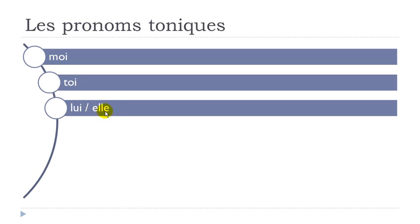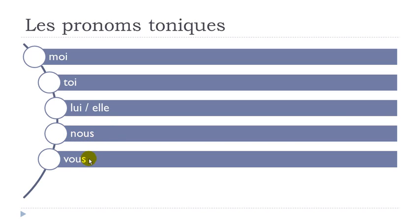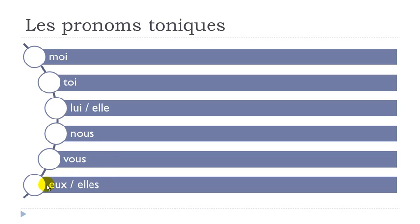But for the feminine form it's the same: ELLE. Good news — same thing for the plural: NOUS and VOUS. They don't change, just like the pronom personnel. And for the third person plural, the masculine form changes and you get EUX — remember the final X is not pronounced: EUX. And then plural ELLES, ELLES. So let's see them one more time: MOI, TOI, LUI, ELLE, NOUS, VOUS, EUX, ELLES.